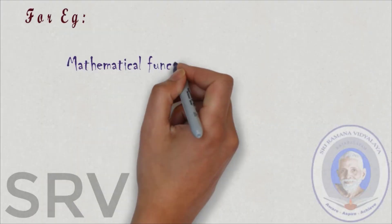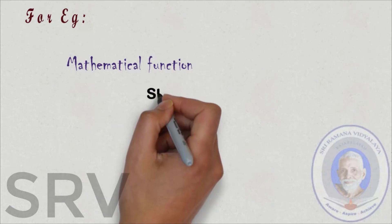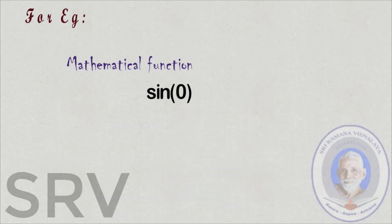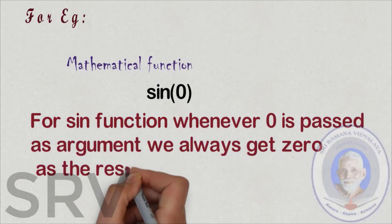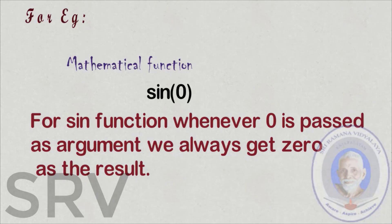To understand this, let's see an example. Consider the mathematical function sin(0). For sin function, whenever 0 is passed as argument, we always get 0 as the result because we have studied and know that sin(0) is equal to 0.